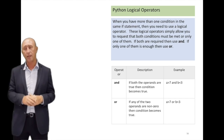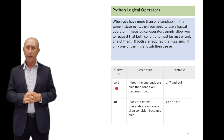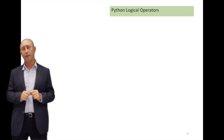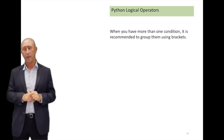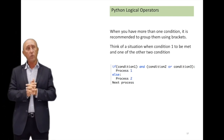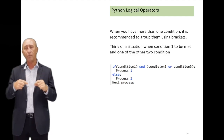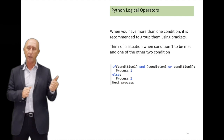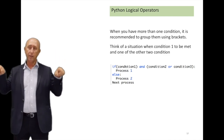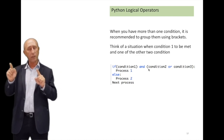The 'or' operator is less restrictive. If you have multiple conditions and you say: if a is greater than 7 or b is less than 7, then only one of those conditions needs to be true for the condition to be fulfilled. When you have more than one condition, it is recommended to group your conditions within brackets so you know which condition is evaluated first.